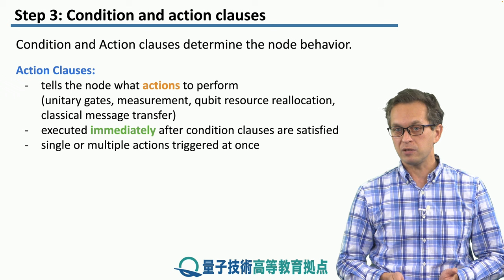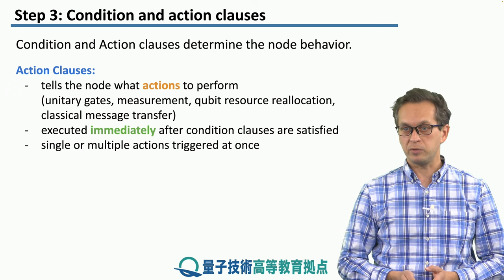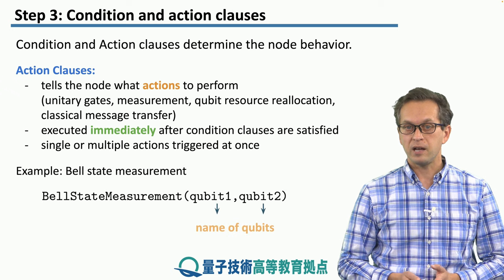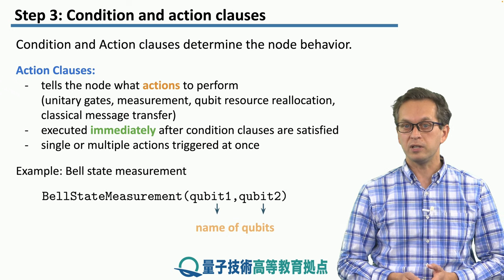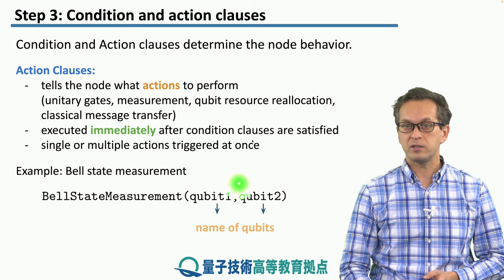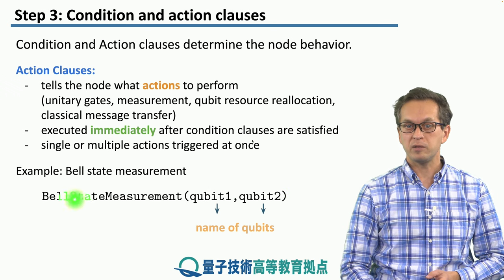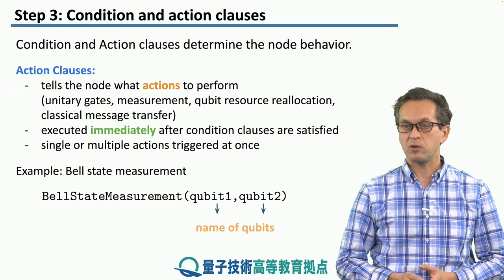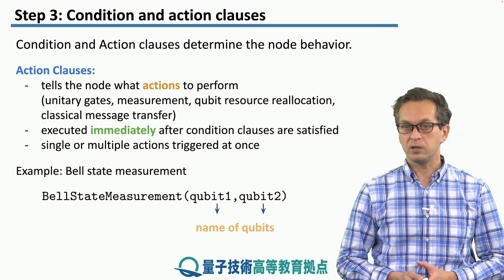For example, we could have single clauses, or we could also have multiple clauses, as we will see in our examples later. An example action clause would be the bell state measurement. Here, we need to pass two parameters into our bell state measurement action clause, and they are the addresses of the qubits on which we are going to perform the bell state measurement.